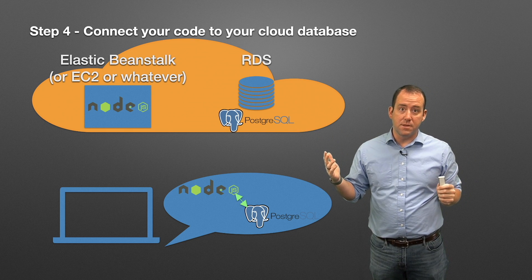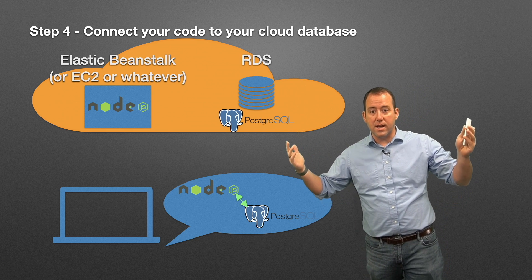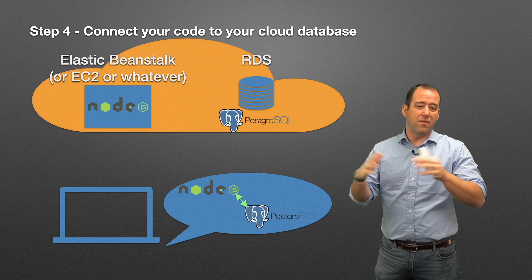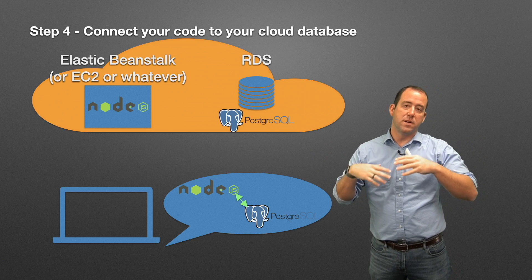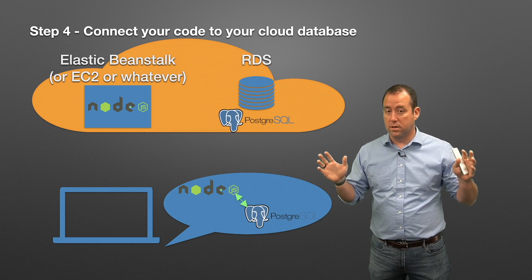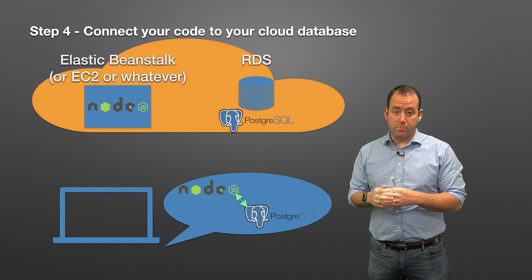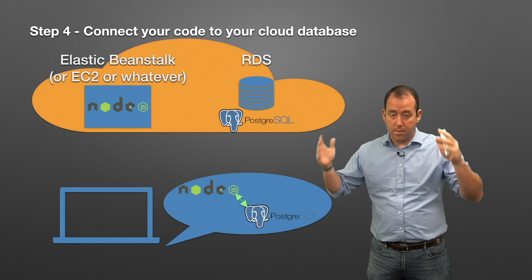RDS is the name of the AWS service that runs your database for you. Every cloud provider has one — you can find their relational database service, whatever it's called, and run your database there.